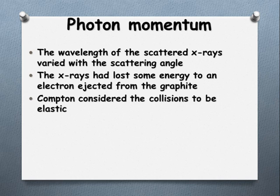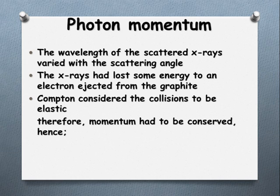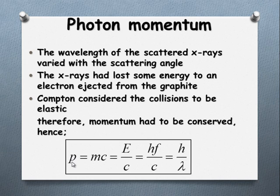Now, so he came up with this theory, considering that there were these elastic collisions occurring. If there's elastic collisions, then momentum is conserved. So looking at the momentum equation, we've got P equals MV, but C being the speed of light is substituted in, which can become E over C.